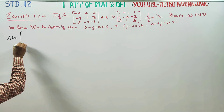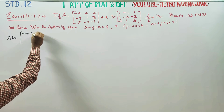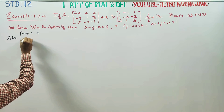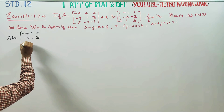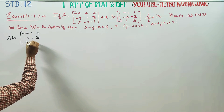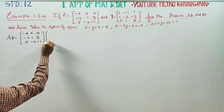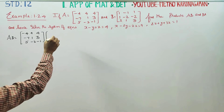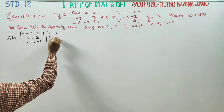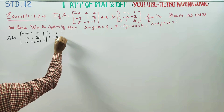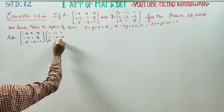A matrix is: minus 4, 4, 4, minus 7, 1, 3, 5, minus 3, minus 1. Into B matrix: 1, minus 1, 1, 1, minus 2, minus 2, 2, 1, 3. You have to just multiply A matrix with B matrix.